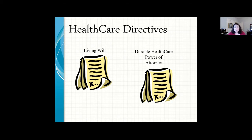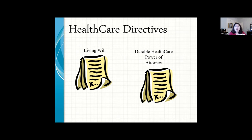Previously, I'd get calls saying a loved one wouldn't want to live like this, but the doctor said she wasn't terminal and wasn't in a permanent coma — and there was nothing that could be done. Now we have the healthcare power of attorney where you can appoint an agent. If your loved one already has a healthcare power of attorney, there are important choices on that document you should double check. It's up to you to have a conversation with your agent to make sure they know your wishes.